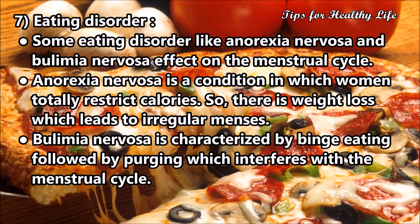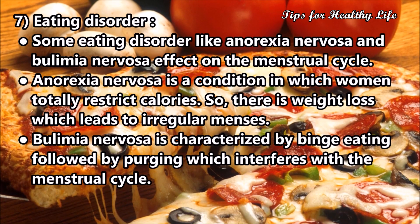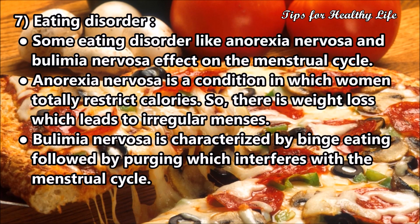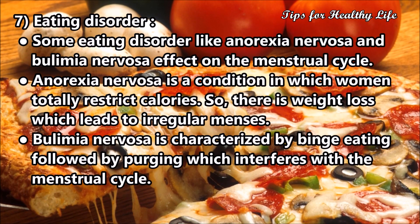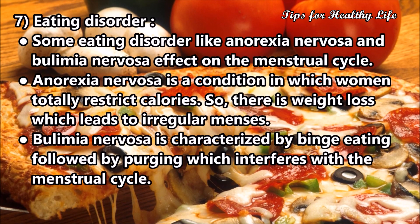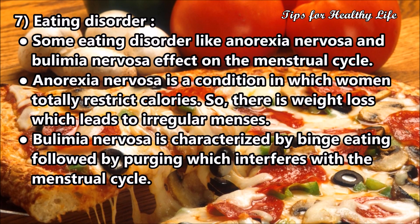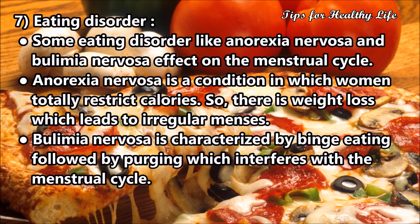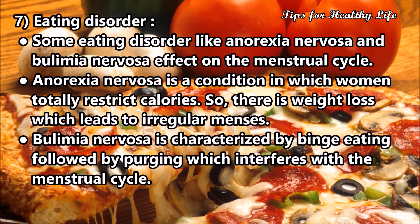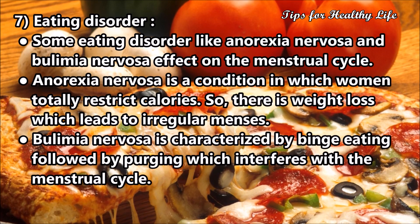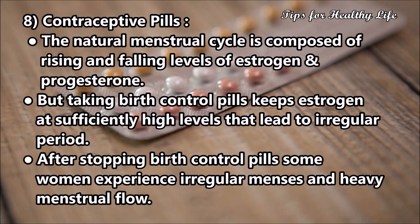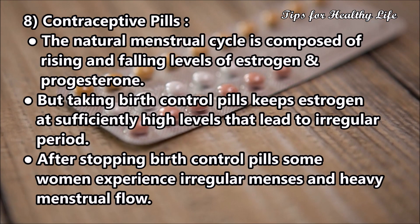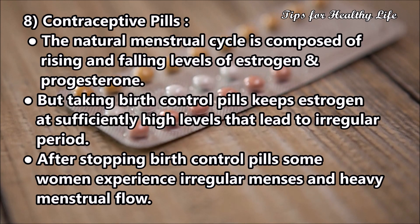Cause 7: Eating disorders. Eating disorders like anorexia nervosa and bulimia nervosa affect the menstrual cycle. Anorexia nervosa is a condition in which women totally restrict calories, leading to weight loss and irregular menses. Bulimia nervosa is characterized by binge eating followed by purging, which interferes with the menstrual cycle.